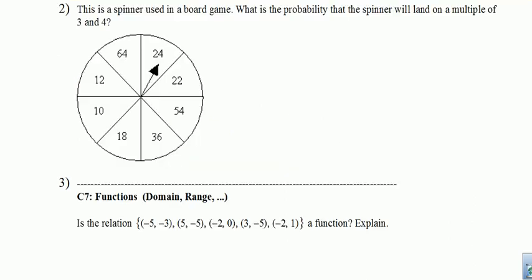Number two asks us to find the probability that when we spin the spinner, we'll land on a multiple of three or four. Well, let's just cruise through here and find out how many of these are actually multiples of three and four.